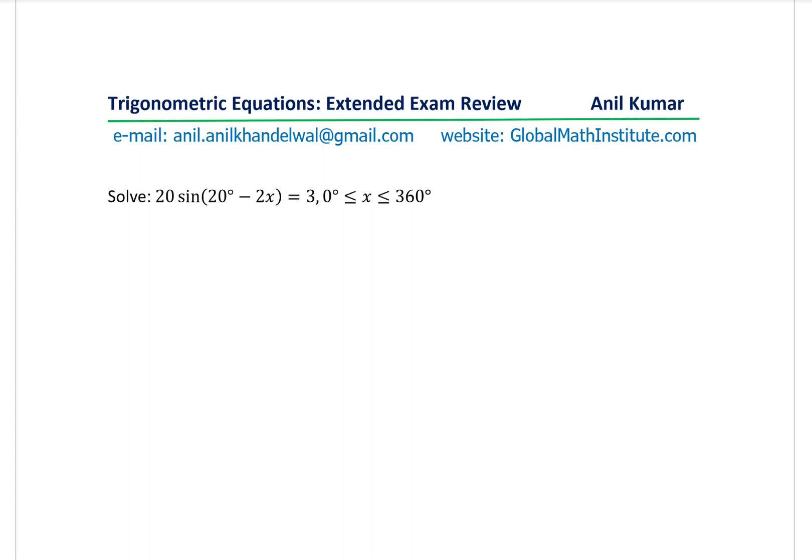Now whenever you are given equations of this form, first thing is we should understand the argument. Let me rewrite the question. We will factor out minus 2. So when you factor out minus 2, you get x minus 10 degrees, equals to 3. Now sin of a negative number is negative, so we can write this as -20 sin(2(x-10°)) = 3, or sin(2(x-10°)) = -3/20.